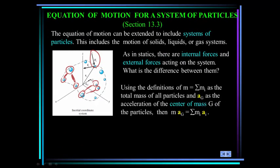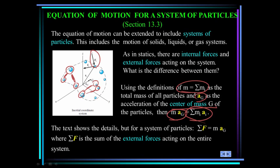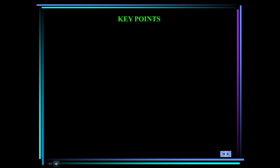External forces come from outside the system of the particles. Now we can define m as the sum of the masses of the particles. And a sub g is the acceleration of the center of mass. In that case, m times acceleration due to gravity is equal to the sum of all the individual ma's. So for a system of particles, the summation of forces is equal to the mass times the acceleration of the center of gravity. And remember, we're only considering external forces.